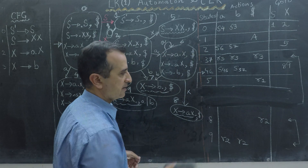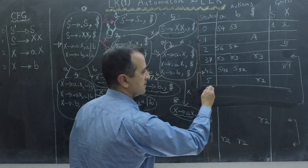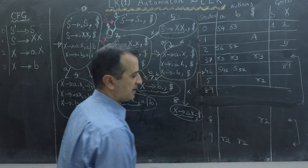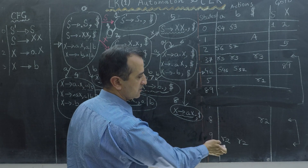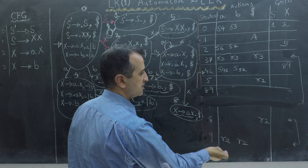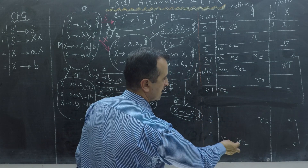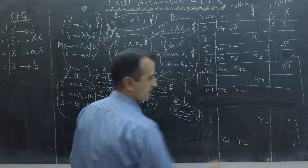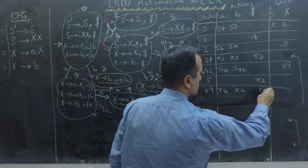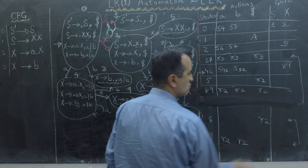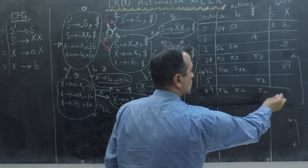Next, I have to combine states 8 and 9, creating a new state 8,9. In state 9, I have a reduce action where state 8 has an empty cell, so I will merge both of those cells writing R2. I will merge the next pair of cells, writing R2, and then the next pair, writing R2. The go-to portion of both states is empty, so I will have an empty go-to portion in the merged state.